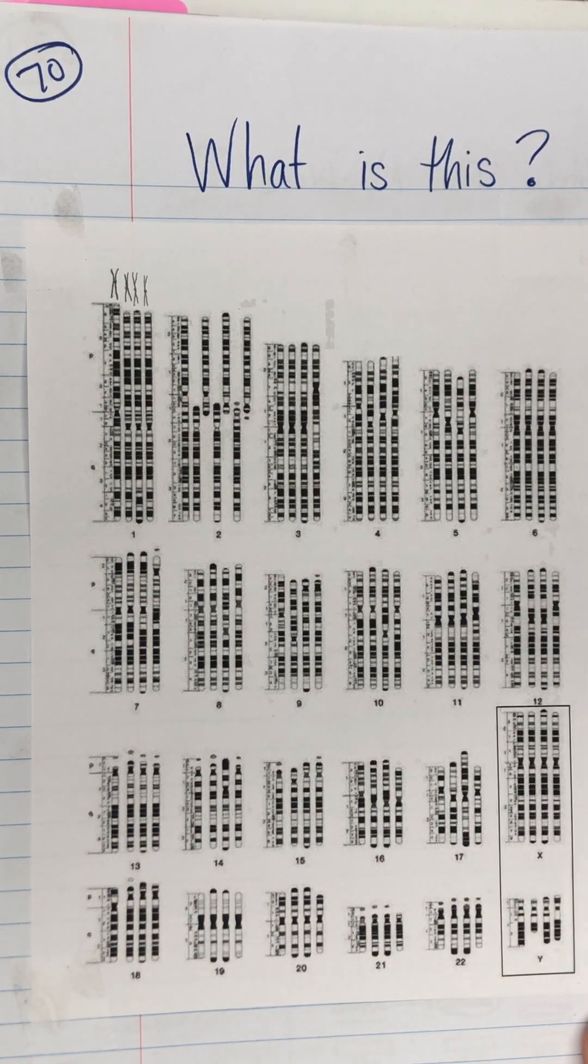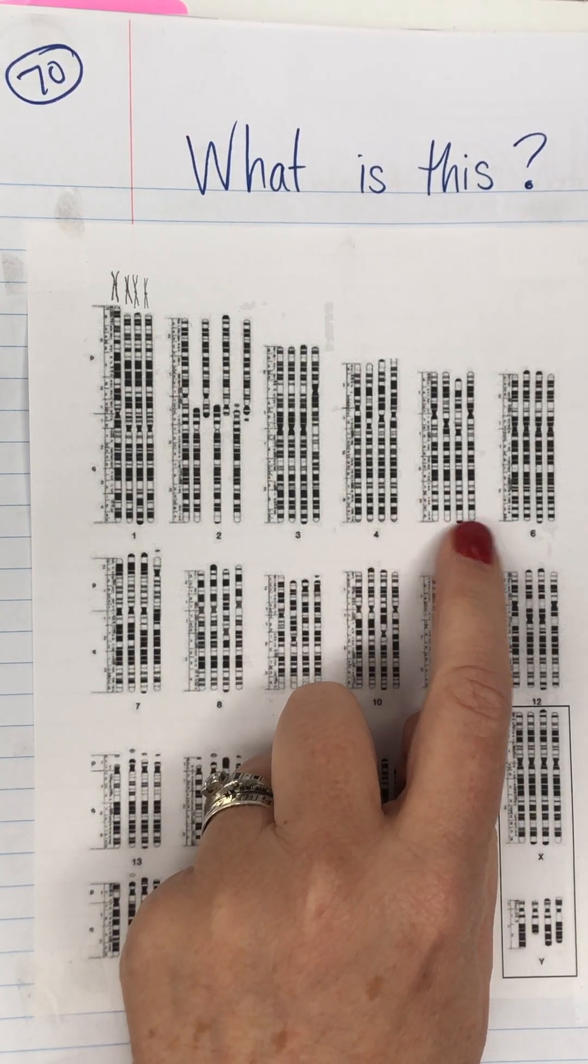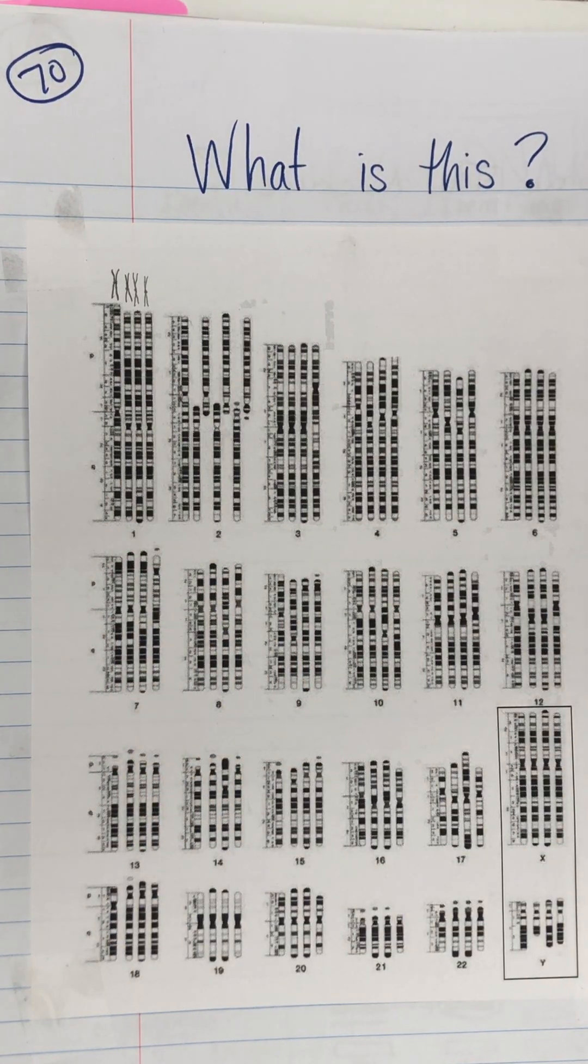So they said it looks like a karyotype, but then they did notice that there was one, two, three, four chromosomes in each of these pair locations. So that's a big problem, and they were absolutely right.